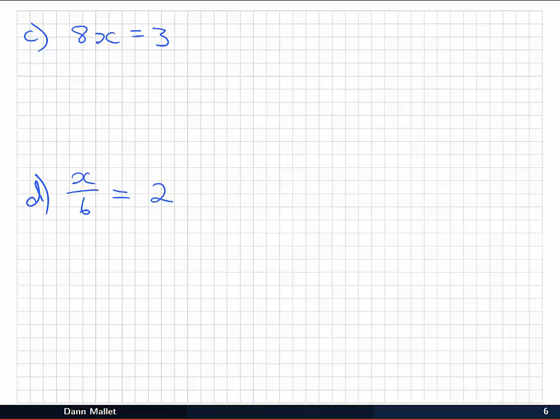In part c, our equation says that 8x is equal to 3. Again I want to solve for the variable. Here the variable is x, so I need to get x all by itself. At the moment I've got an 8 which is stopping me from seeing x all by itself, a multiple of 8. To get rid of a multiple of 8, I need to divide by 8, and again I need to do it on both sides.